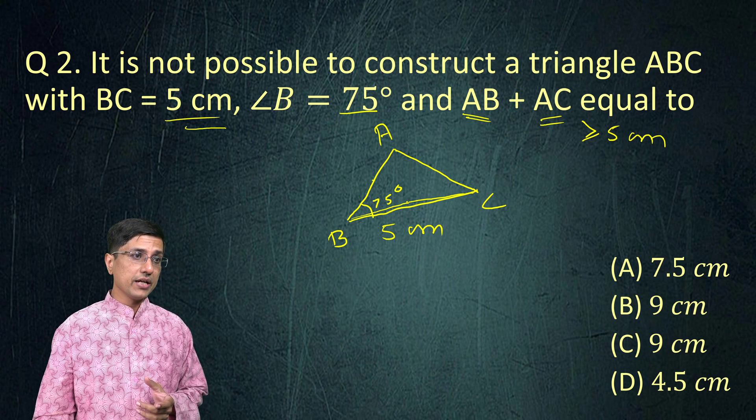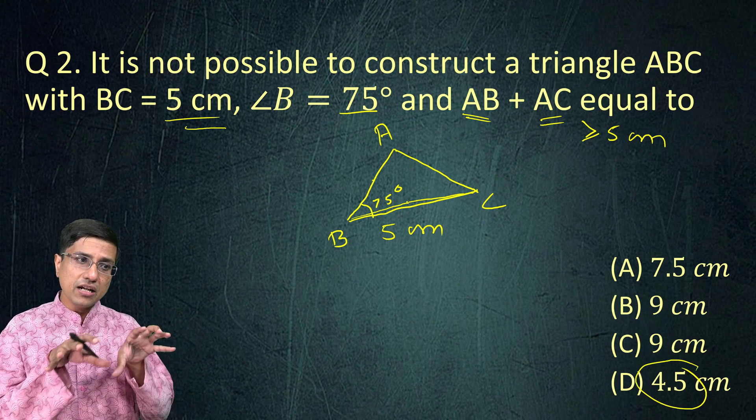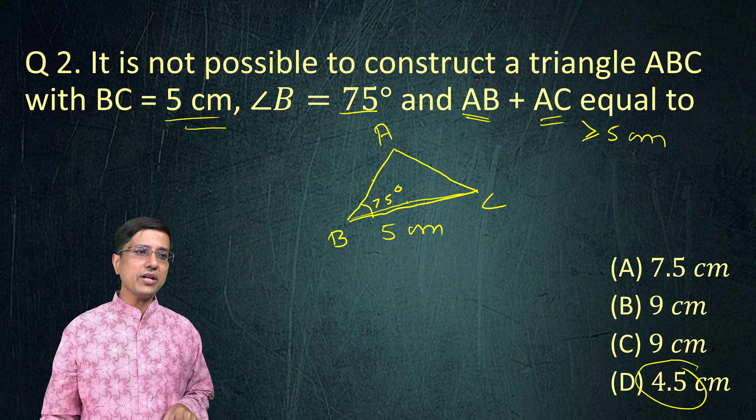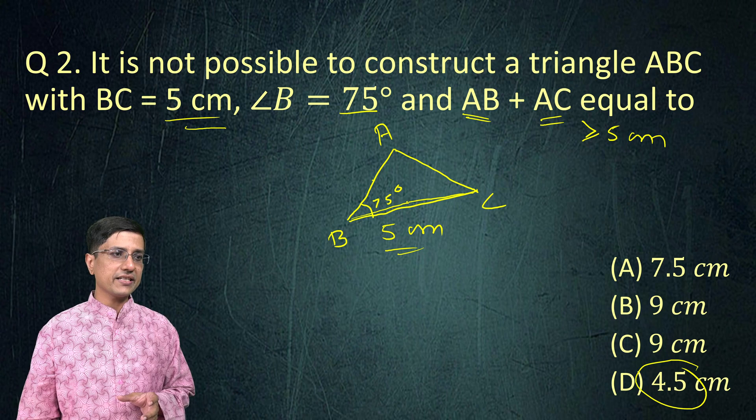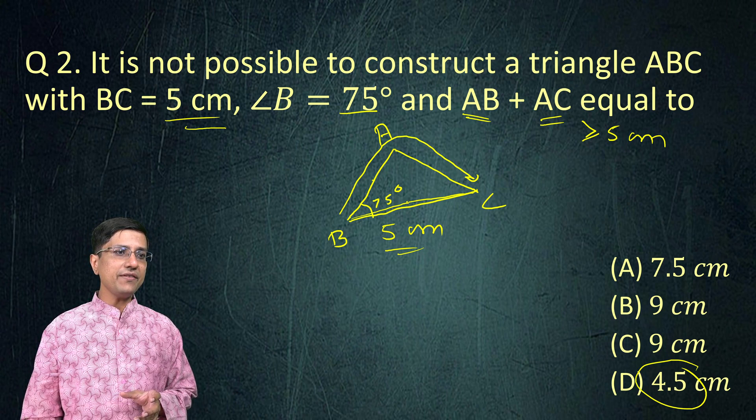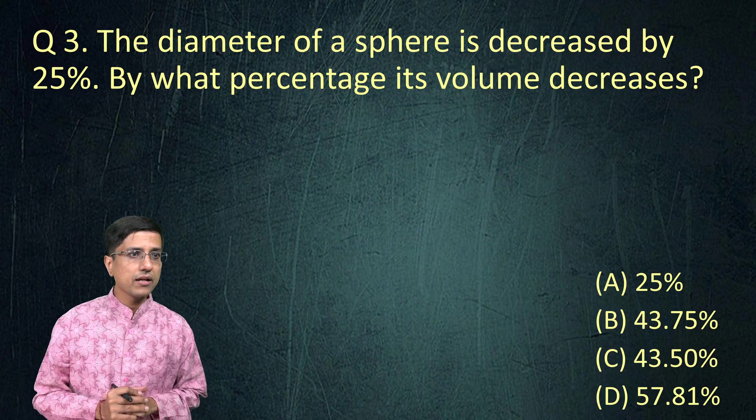So the correct choice in this problem is 4.5 cm. It's pretty trivial. Once you draw the diagram, you'll be able to visualize it that this AB + AC can never be less than 5. This length has to be greater than 5, 100%.